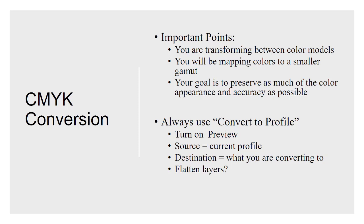There are a few things to do. When you convert to profile, make sure you turn on preview — that's going to show you on screen the result of that color conversion, and you'll see sometimes it's quite a significant difference. There's also a question on the quiz about soft proofing, so be sure to look into that. The source in the Convert to Profile dialog means what is your current profile of your document right now. The destination is what you're converting to — so the source might be Adobe RGB and the destination might be SWOP.